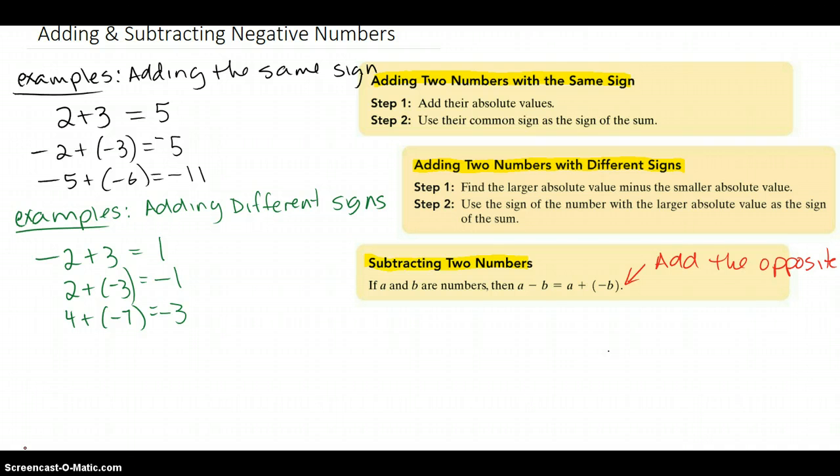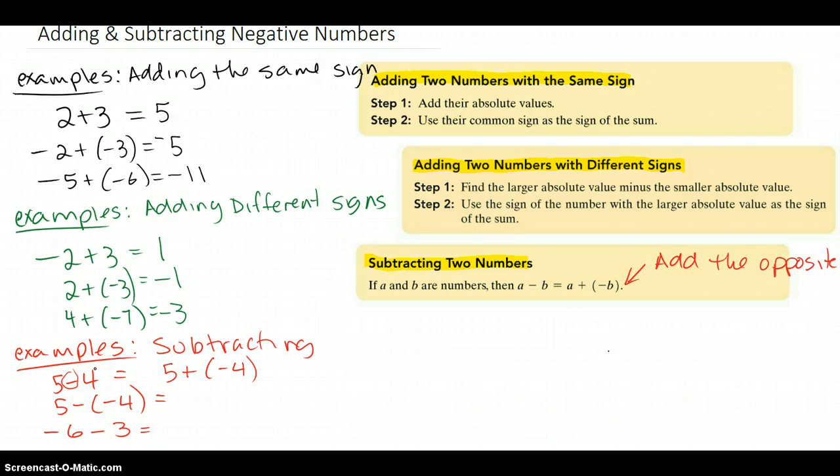Let's look at some examples. 5 minus 4 we know is 1. My claim is 5 minus 4 is the same as 5 plus negative 4. I'm going to circle that. That's a minus, so that's a positive. We've got to add the opposite. The opposite of positive 4 is negative 4.